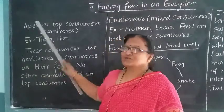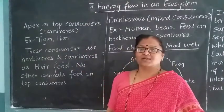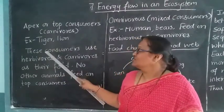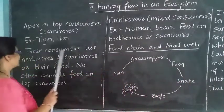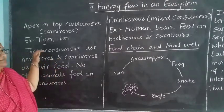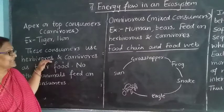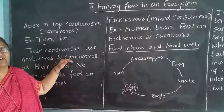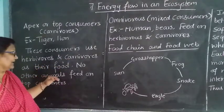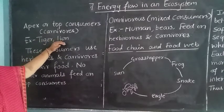Apex or top consumers are also called carnivores. For example, tiger and lion. These consumers use herbivores and carnivores as their food. No other animals feed on the top consumers — meaning no one is feeding on these types of consumers.